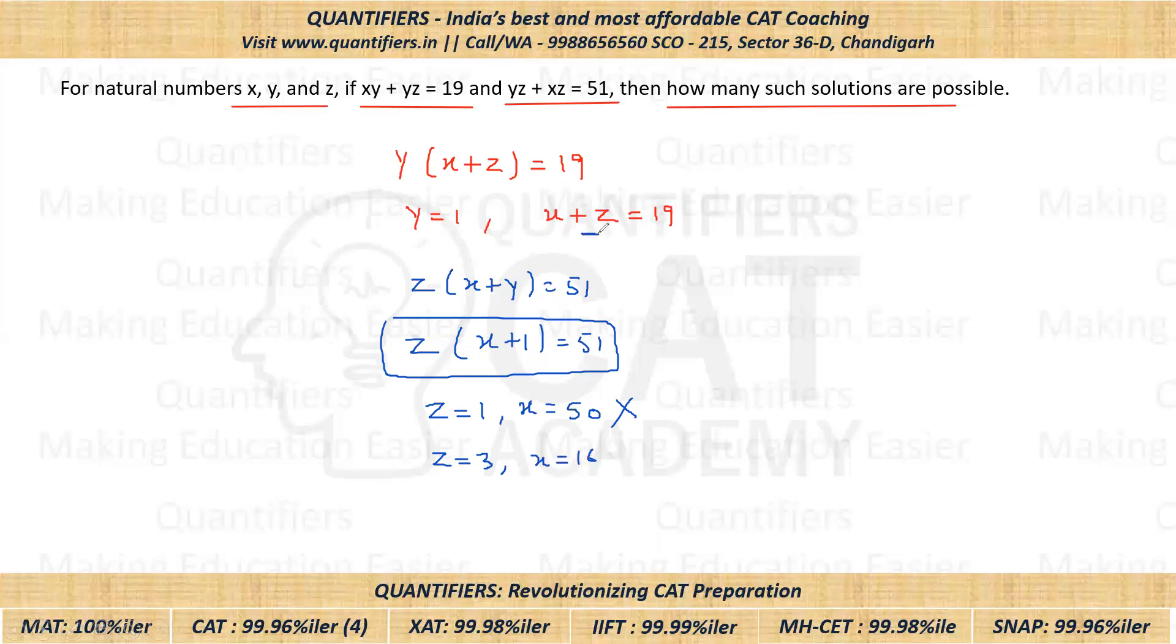Now is it satisfying x plus z equals 19? Yes, it is satisfying. That means if z is 3, x is 16, and obviously y is 1. So this is one of the solutions. This is one of the solutions. I hope this is clear.